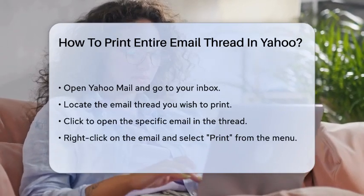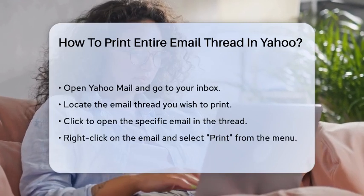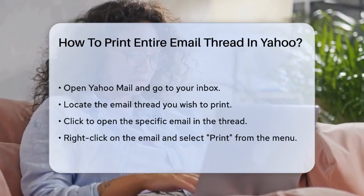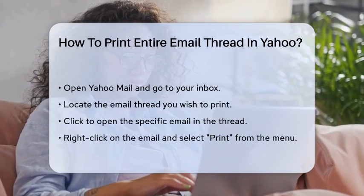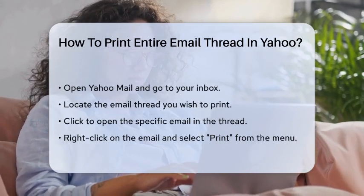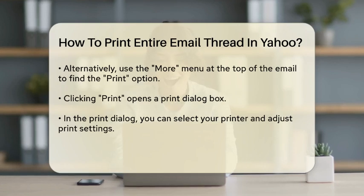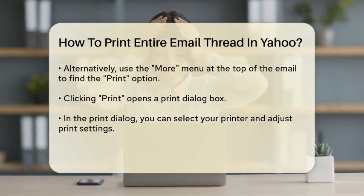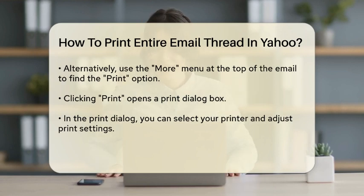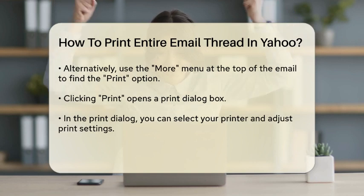Once you've opened the email, you'll see several options. To print the email, you have a couple of methods you can use. One way is to right-click on the email and select Print from the drop-down menu. Alternatively, you can open the email and click on the More menu, which is usually located at the top of the email. In the More menu, you'll find the Print option.